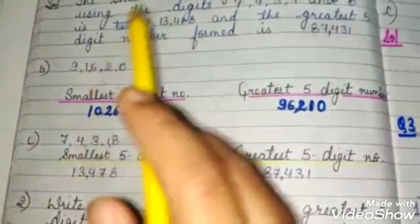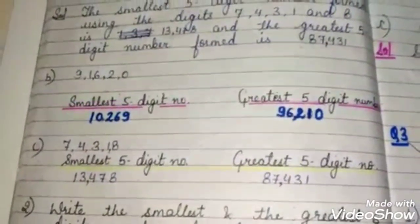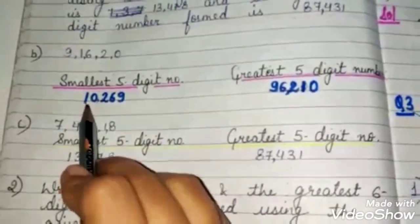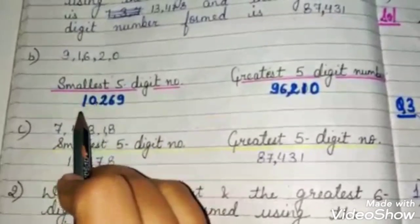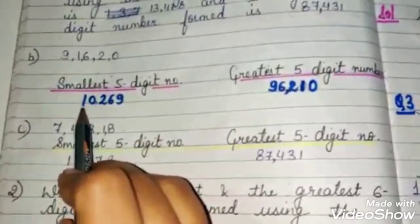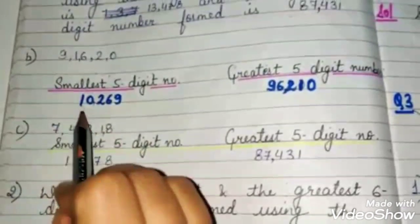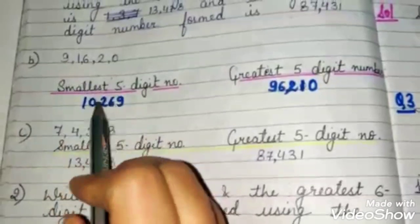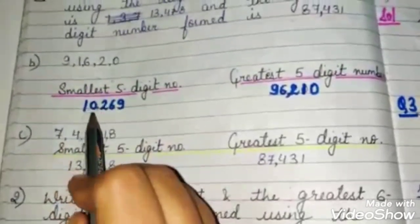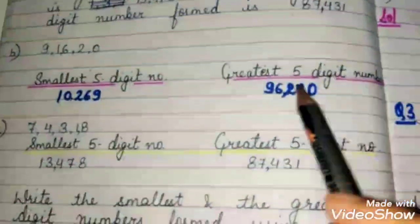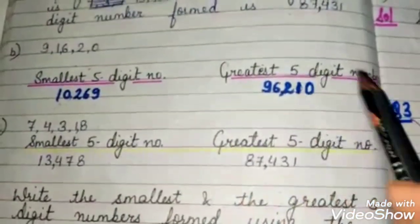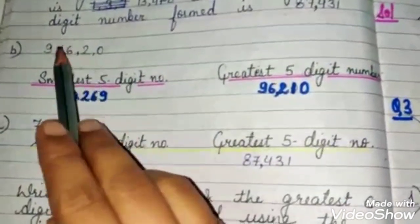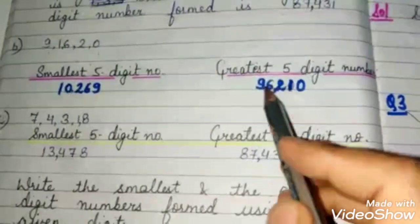Second set of digits: 9, 1, 6, 2, 0. The smallest 5-digit number — we never start a number with 0, so we start with 1, then 0, then 2, then 6, then 9 — the number formed is 10,269. The greatest 5-digit number is 9, 6, 2, 1, 0.